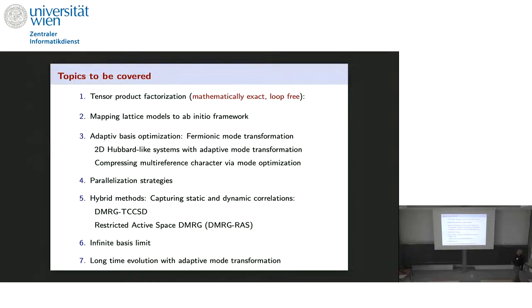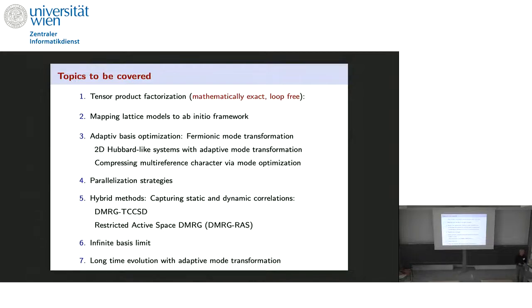The major part of the talk is this adaptive basis optimization, which we can adopt as a family of mode transformations. I'll show some Hubbard-like examples, and then discuss how this relates to weakly and strongly correlated systems — and how to push stronger correlations to basically disentangle the system. In quantum chemistry this is called the single and multi-reference problem.